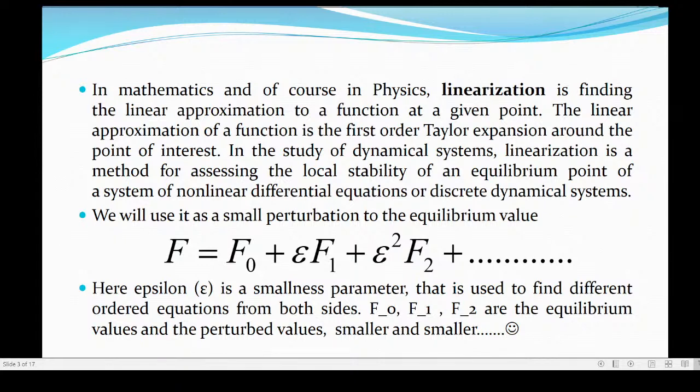Here epsilon is known as the smallness parameter. We also call it a perturbation parameter that is used to find different order equations from both sides: f_0, f_1. These are the perturbed values. Higher the numbers, f_2, f_3, f_4, they become more and more smaller, more and more negligible.